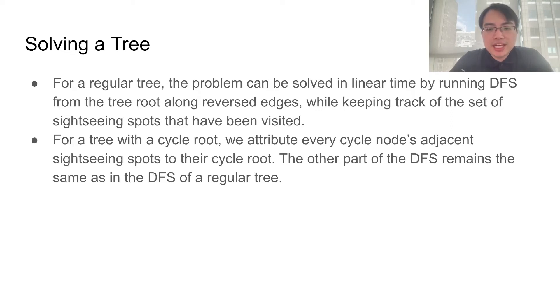We will attribute every cycle node's adjacent sightseeing spots to their corresponding cycle root. The other part of the DFS remains exactly the same as the DFS on a regular tree.